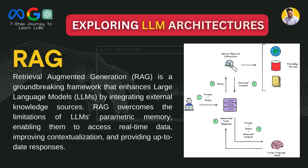RAG is a groundbreaking framework used by large language models to enhance and increase their knowledge base. RAG enables large language models to remember more, access information in real time, and improve the context of the generated information. Whenever a user puts a prompt and query to the large language model, the query searches for relevant information in knowledge resources, and the enhanced context is returned to the LLM, which then generates the desired output.